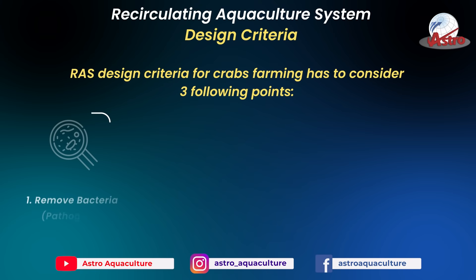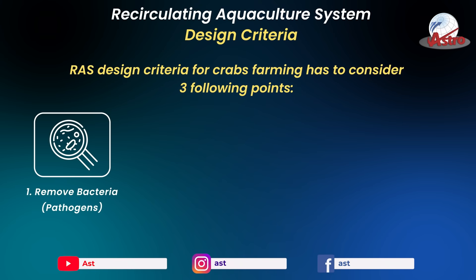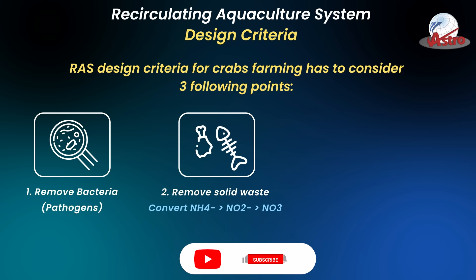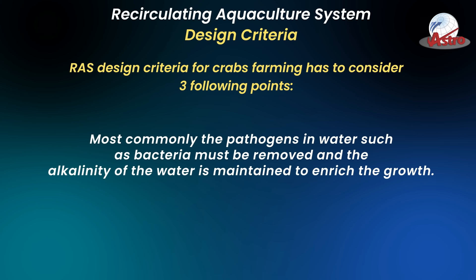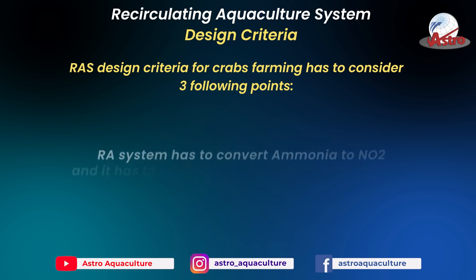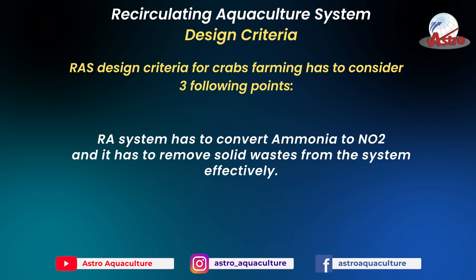Recirculating aquaculture system design criteria for crab farming must consider the following points: remove bacteria and pathogens, remove solid waste, and convert NH4 to NO2 to NO3, while maintaining alkalinity and pH. Pathogens such as bacteria must be removed, alkalinity maintained, and ammonia must be converted to NO2 while solid wastes are effectively removed from the system.